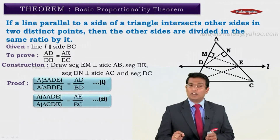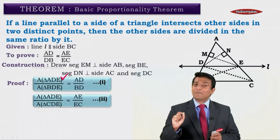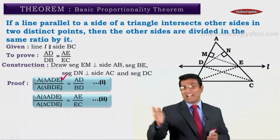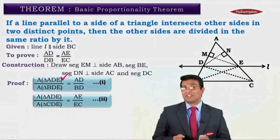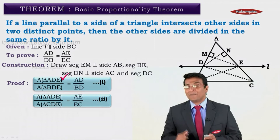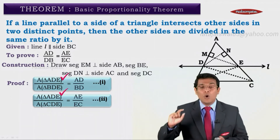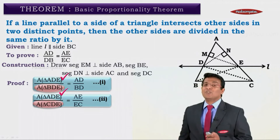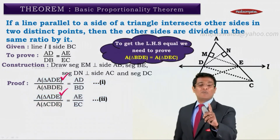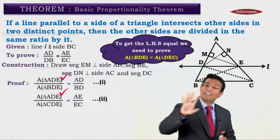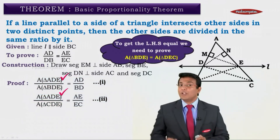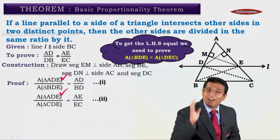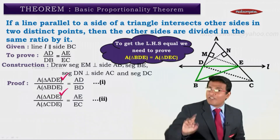To make the right-hand sides equal, we need the left-hand sides to be equal. Observing statements 1 and 2, the numerators on both left-hand sides are the area of triangle ADE — they are the same. The denominators are area of triangle BDE (statement 1) and area of triangle CDE (statement 2). If we get these two denominators equal, the left-hand sides become equal and hence the right-hand sides become equal, giving us the proof. So we need to show that area of triangle BDE equals area of triangle DCE.